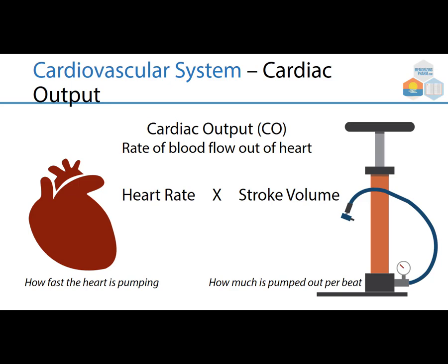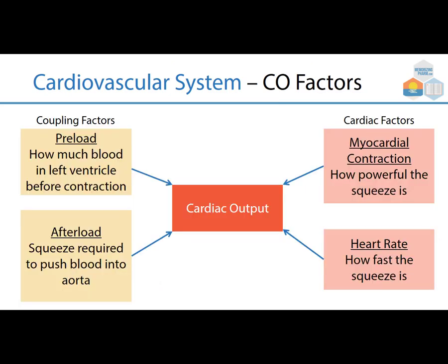There are coupling factors and cardiac factors. The coupling factors begin with preload — how much blood is in the left ventricle before contraction — and afterload — the pressure required to push blood into the aorta. The cardiac factors include myocardial contraction (how powerfully it contracts) and heart rate (how fast the squeeze is). All of this adds up to the cardiac output.